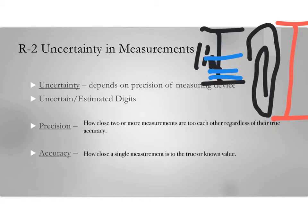We have precision and accuracy — these are related but different. Precision is how close two or more measurements are to each other, regardless of their true accuracy. For example, water boils at 100 degrees Celsius. If you put a thermometer in boiling water and it shows 99.4, and another thermometer also says 99.4, those two thermometers are very precise.